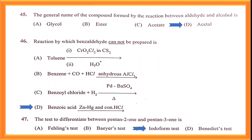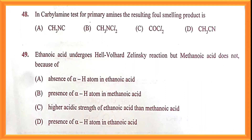Question number forty-seven: iodoform test is the correct answer. Question number forty-eight: the carbylamine test for primary amines — the foul-smelling product formed is isocyanide. Option A is the correct answer.